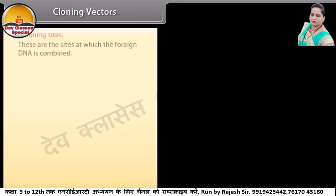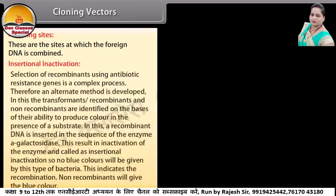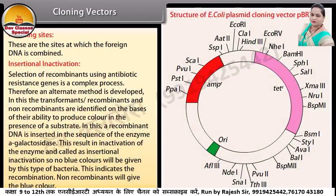Cloning vectors also have cloning sites, which are the sites at which the foreign DNA is combined. Insertional inactivation: selection of recombinants using antibiotic resistance genes is a complex process. Therefore, an alternate method is developed. In this, transformants, recombinants, and non-recombinants are identified on the basis of their ability to produce color in the presence of a substrate. A recombinant DNA is inserted in the sequence of the enzyme beta-galactosidase, resulting in inactivation of the enzyme — called insertional inactivation — so no blue color will be produced by this type of bacteria, indicating recombination.